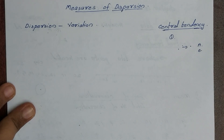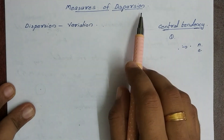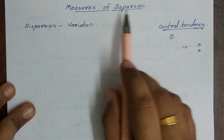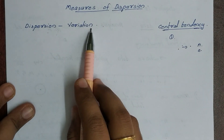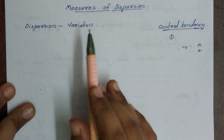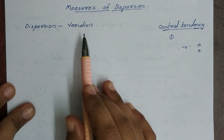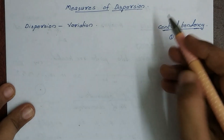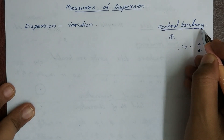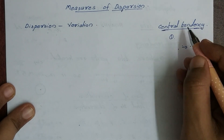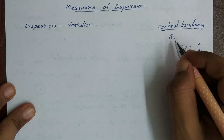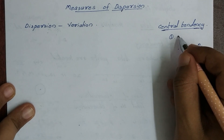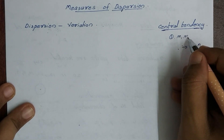Hi everyone. In this video, we will introduce the Measures of Dispersion. Dispersion is the meaning of variation. We have already started central tendency. Now we have three terms: Mean, Median, and Mode.